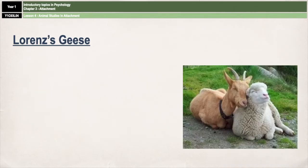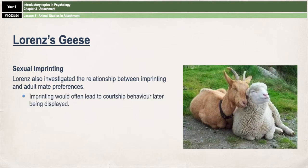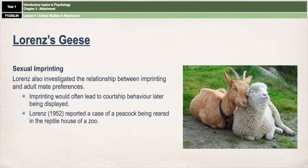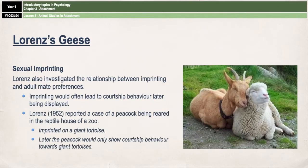Lorenz later investigated the relationship between imprinting and adult mate preferences, finding that imprinting would often lead to courtship behaviour later being displayed. An example he reported was an orphaned peacock reared in a reptile house at the zoo. The peacock ended up imprinting on a giant tortoise, which later resulted in the peacock showing courtship behaviour towards giant tortoises. This is known as sexual imprinting.